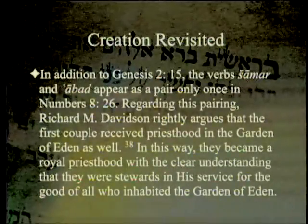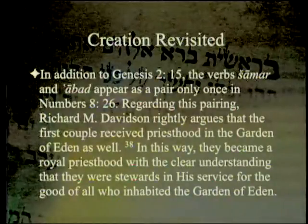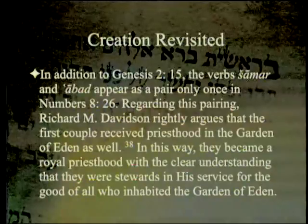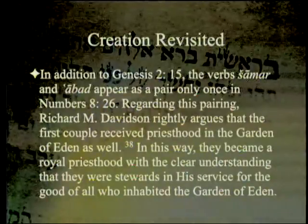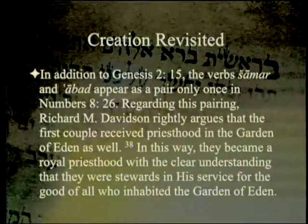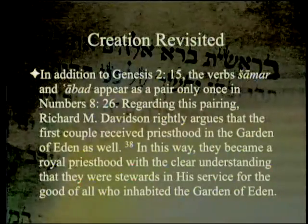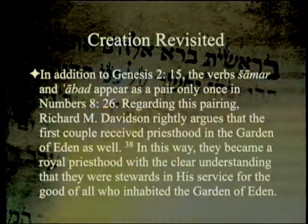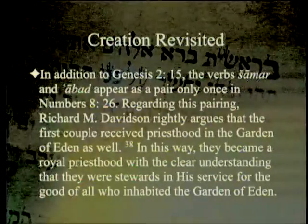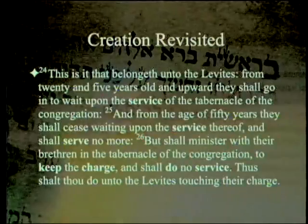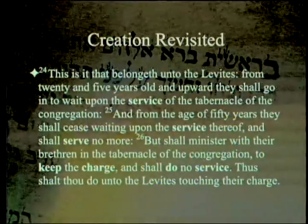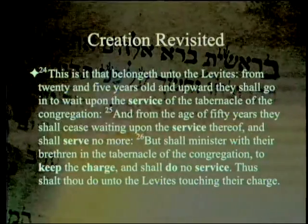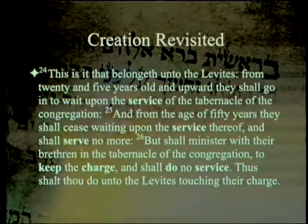The verb 'shamar' and 'abad' appear as a pair only once in Numbers 8:26. Richard M. Davidson rightly argues that the first couple received priesthood in the Garden of Eden as well, becoming a royal priesthood — stewards in God's service for the good of all who inhabited the Garden of Eden. However, this text speaks of the Levites, not the priests, so one might characterize their role as Levitical rather than strictly priestly.